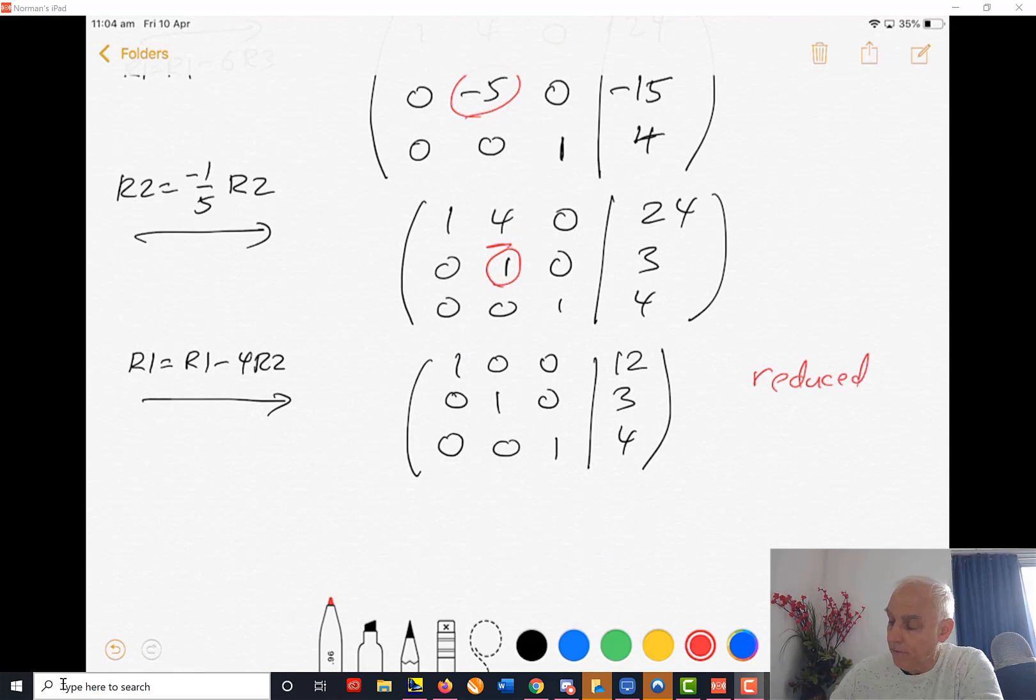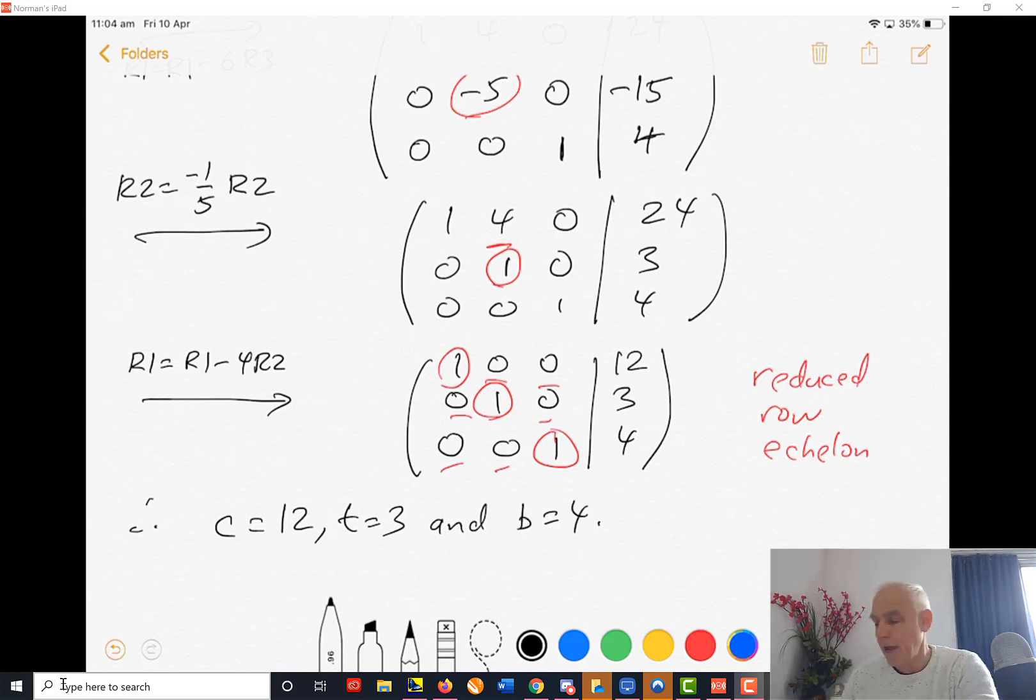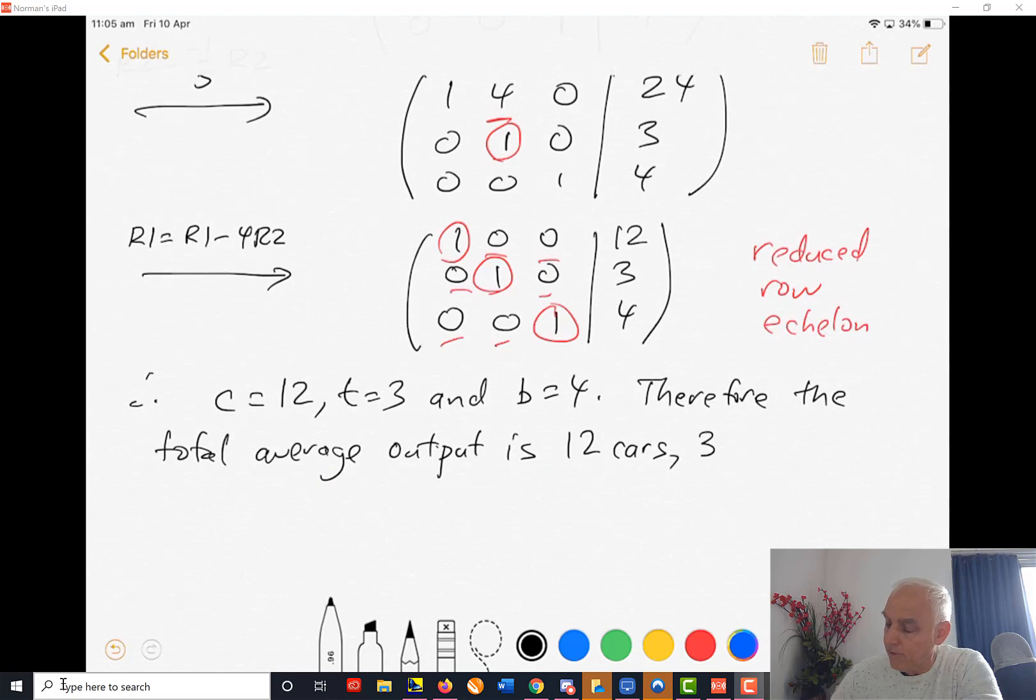Now it's in reduced row echelon form. There are leading entries of 1s, there's 0s entirely in the columns of those leading entries, and we can just read off the solution. Therefore, C equals 12, T equals 3, and B equals 4. Therefore, the total average output is 12 cars, 3 trucks, and 4 buses on average.